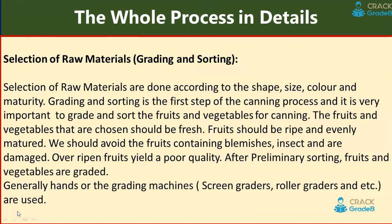Selection of raw materials, grading and sorting: selection is done according to shape, size, color and maturity. The right choice of raw material is very important for successful canning. Fruits and vegetables chosen should be fresh; fruits should be ripe and evenly matured. Fruits with blemishes, insect damage should be avoided.